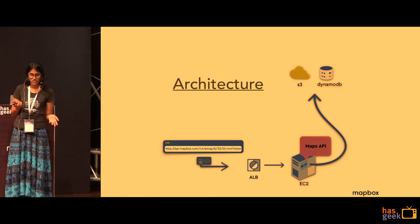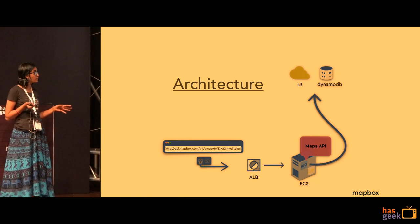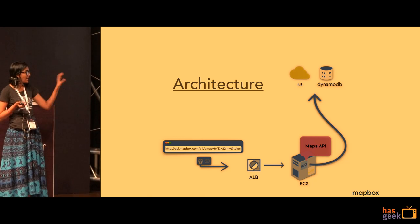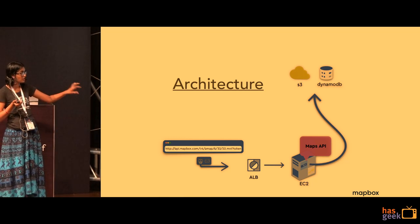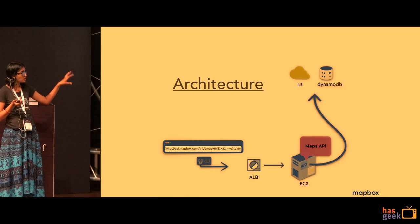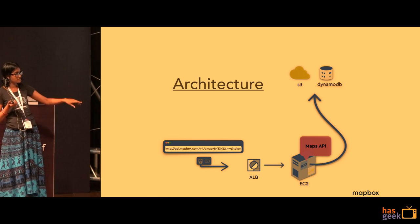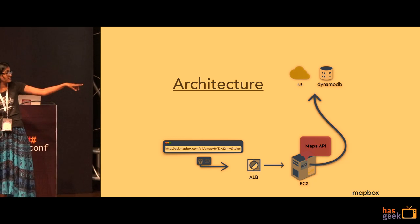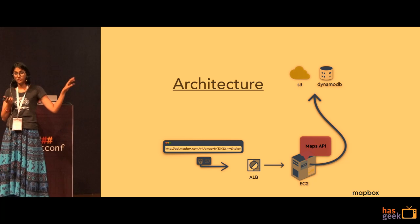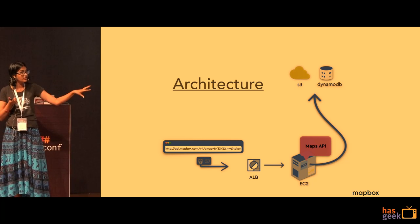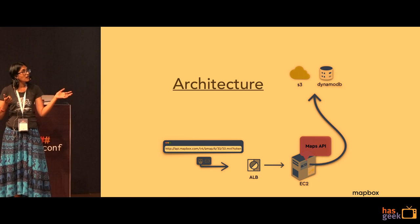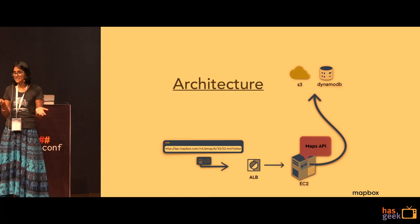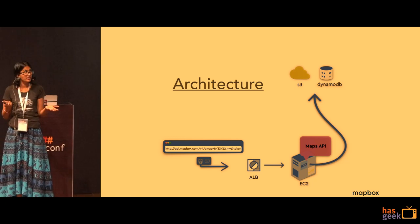You can think of our architecture as being composed of three parts. Everything that happens from the time we receive a request until that request reaches a load balancer, and then the load balancer — denoted by an ALB in this diagram — routes the request to a server in the auto-scaling group. The server then retrieves whatever ingredients it needs to fulfill that particular request.